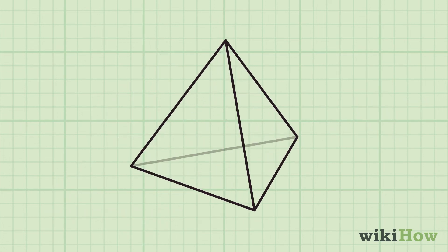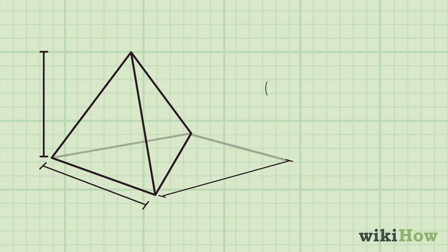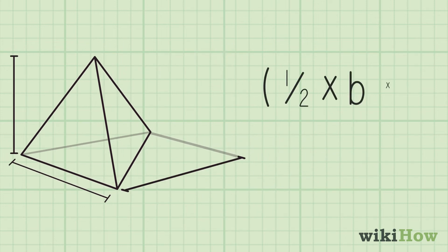For pyramids with a triangle base, the technique is a little different. If you know the triangle's height and the width of the base, plug those numbers into the formula one-half times base times height to find the area of the triangle.